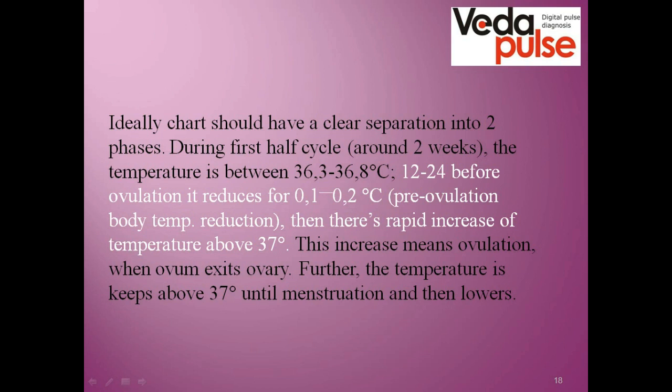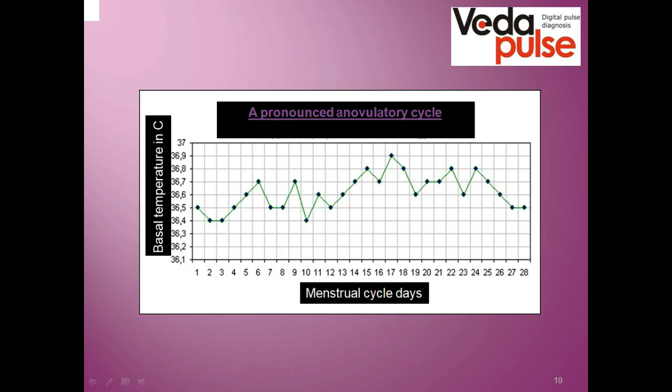Then there is a rapid increase of temperature above 37 degrees, which means ovulation. When the ovum exits the ovary, the temperature remains above 37 degrees, and then it lowers. There are situations when there is no ovulation during a cycle, meaning the ovum doesn't mature — this is called an anovulatory cycle. It is when there is no separation into two phases. Such cycles are absolutely normal for healthy women two to three times a year, and this number may increase with age.